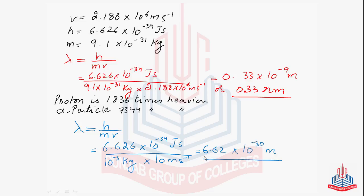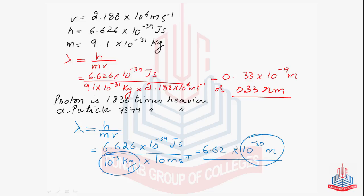The same conclusion: as mass increases, the associated wavelength decreases. This wavelength is so small that it cannot be measured by any conceivable method. Heavy particles do have waves associated with them, but they cannot be captured. We say macroscopic bodies don't have measurable waves. Every moving object has a dual character — it possesses wave qualities as well as particle qualities — but as mass increases, the wavelength decreases, so the particle characteristic dominates and the wave characteristic becomes negligible.